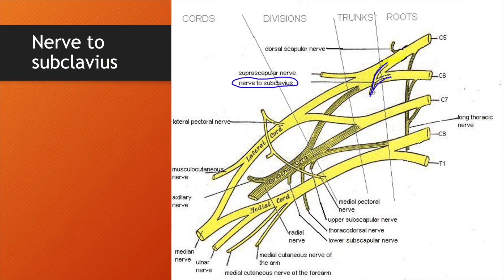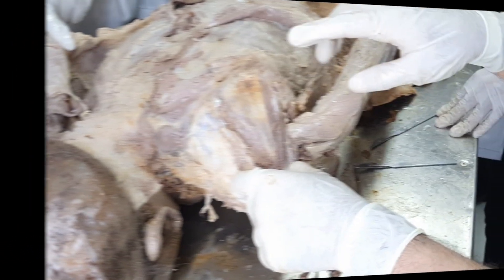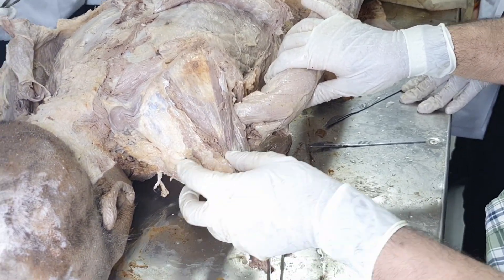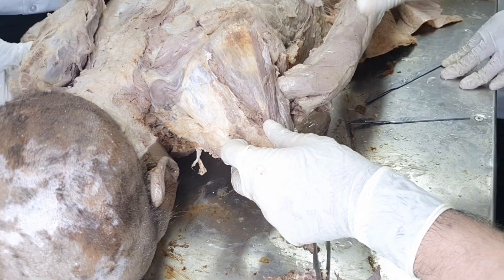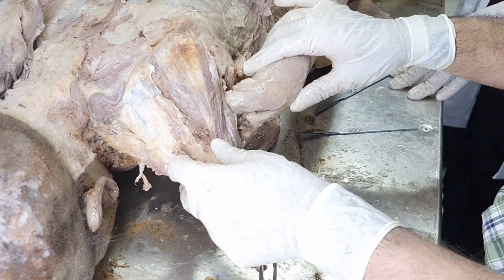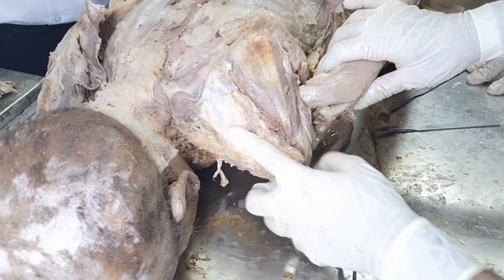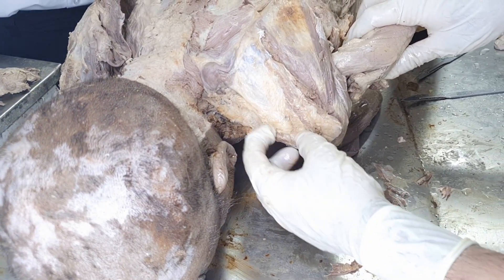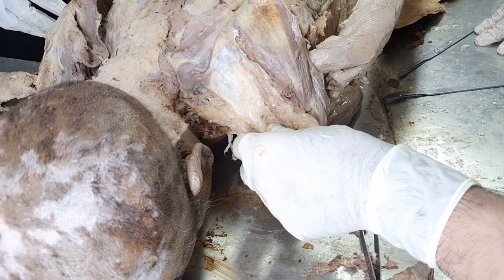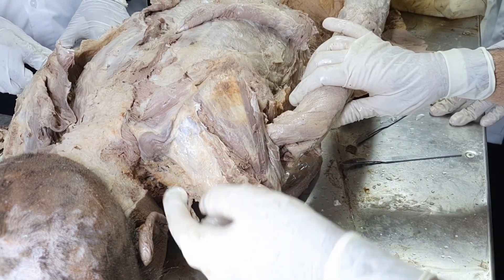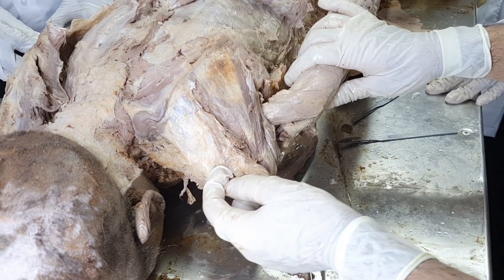Remember that nerve to subclavius occasionally takes origin from the roots C5 and C6, but the suprascapular nerve consistently takes origin from the upper trunk. The suprascapular nerve descends down from the upper trunk, reaches laterally along the upper part of the scapula, and at the suprascapular notch — on the upper border — there is a suprascapular ligament binding the notch, converting it into a foramen. The suprascapular nerve passes below the suprascapular ligament.